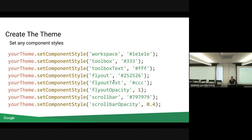Now, we have a theme with block styles and category styles. Now, we can set everything else. There's Workspace, Toolbox, Flyout, and for these, you just set the component style.